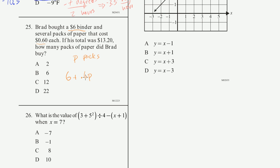So this is the total. $6 for the binder plus $0.60 for each of the packs. If you bought 10 packs, then you do 10 times $0.60 per pack. But we don't know what it is, so we just leave it as p. And the total cost was $13.20. So we just have to solve for p. How many packs of paper did Brad buy? So if we subtract 6 from both sides of this equation, subtract this 6 from both sides, you get 0.6p. This minus 6 and that positive 6 cancel out. And so you're just left with 0.6p on the left hand side is going to be equal to $13.20 minus $6. 13 minus 6 is 7. So it's going to be $7.20.